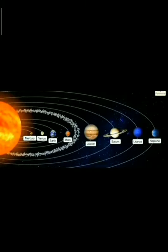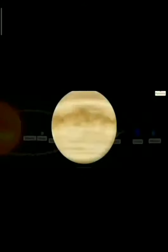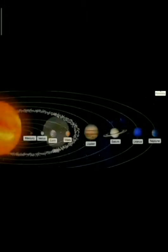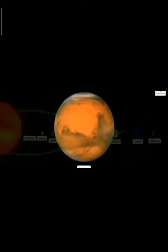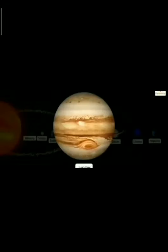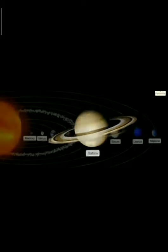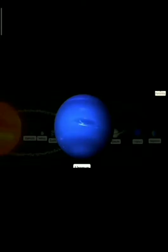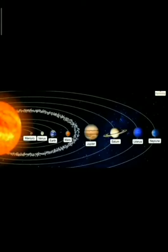The first planet is Mercury, second Venus, Earth, Mars, Jupiter, Saturn, Uranus and Neptune. There are 8 planets in our solar system.